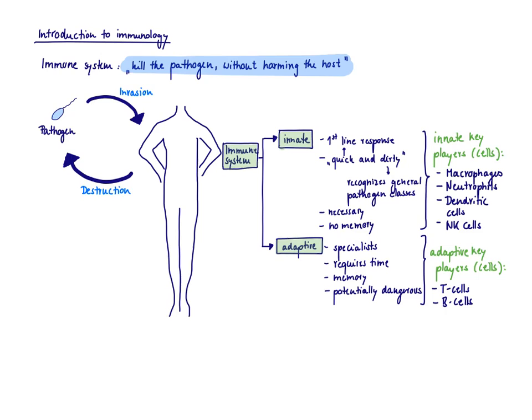Let's just add in the cells that are going to show up that are the key players of the innate and the adaptive immune system. The key players of the innate immune system are macrophages, neutrophils, dendritic cells, and the NK cells, the natural killer cells. The adaptive key players are T and B cells.